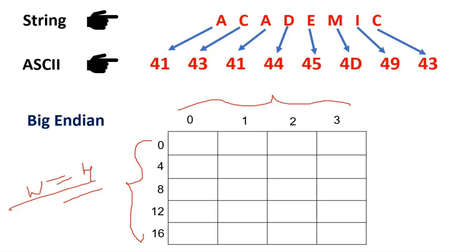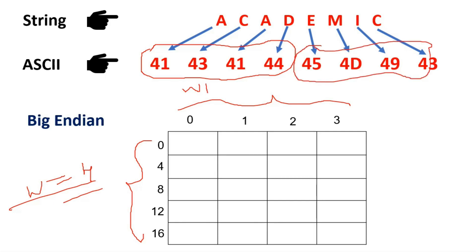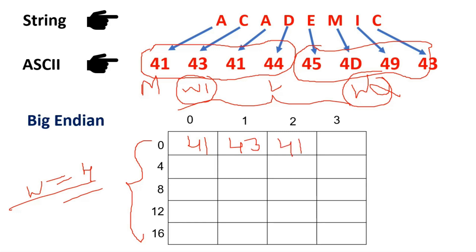To store 2 words, each 4 bytes, we take the first word — the first 4 ASCII characters (each 1 byte) — as word 1, and the last 4 ASCII as word 2. We place word 1 first, then word 2. In word 1, ASCII 44 is the least significant byte and ASCII 41 is the most significant byte. According to big endian, the most significant byte occupies the least address, so 41 comes first, then 43, then 41, then 44.